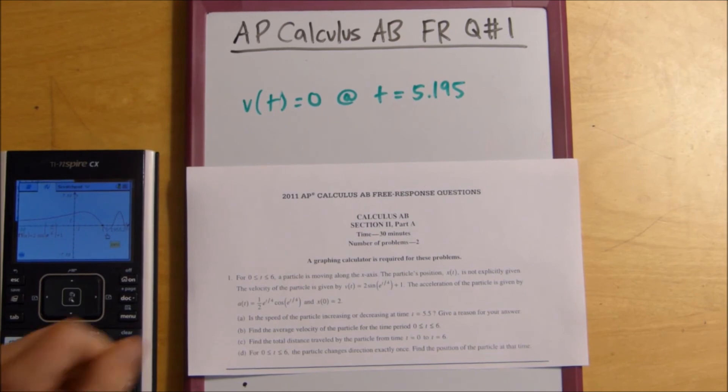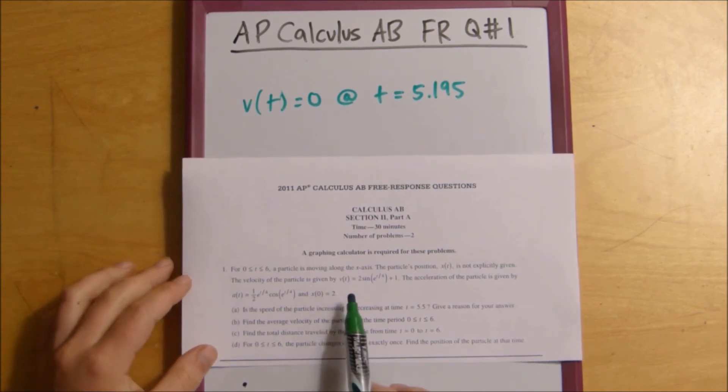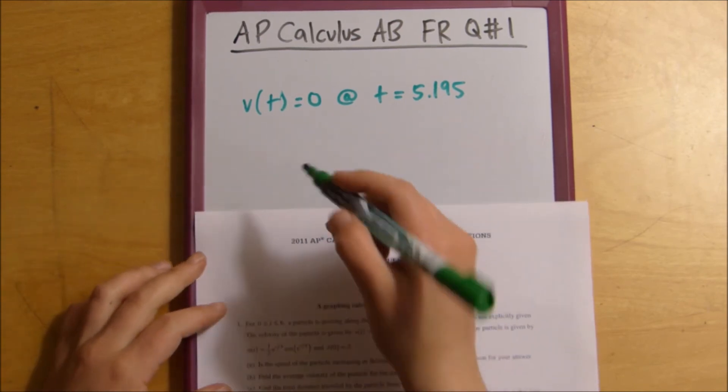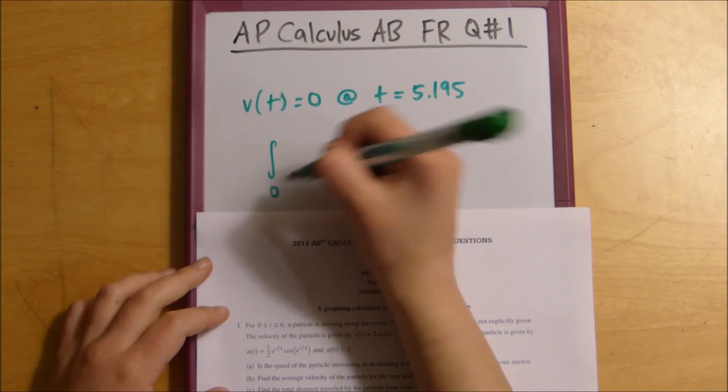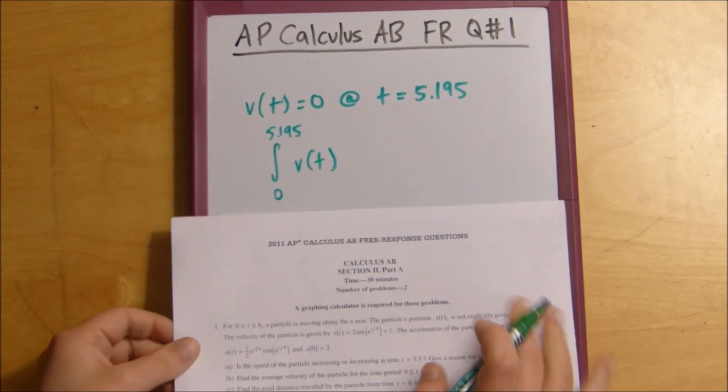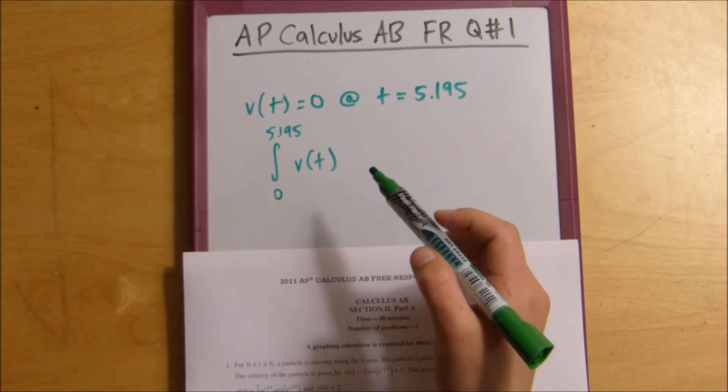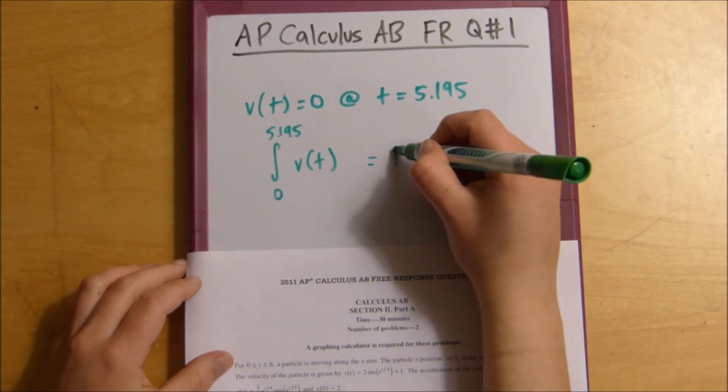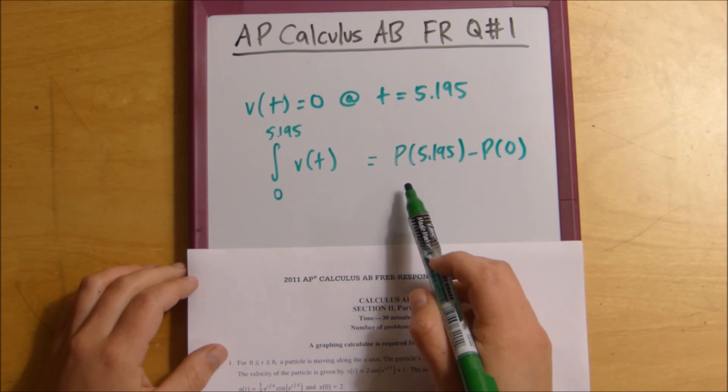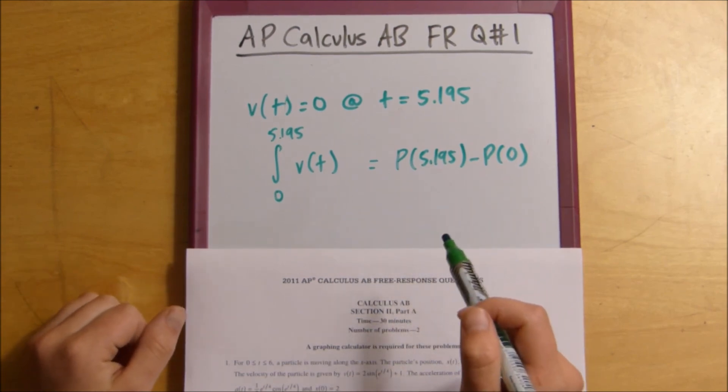So, what we're going to want to do is find the position. And we can find the position by taking the integral of this and then we can also use this additional information provided to us that x of 0 equals 2. So, what we can do is find the integral from 0 to 5.195 of V of t. And since we know that when you take the integral of a derivative, we know that you're going to end up with the position of 5.195 minus the position of 0.